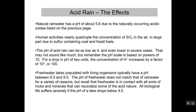Freshwater lakes with living organisms unaffected by man-made pollution would have a pH between about 6.5 and 8.5. But the pH of freshwater doesn't always match that — the water is in contact with all sorts of things that can dissolve and change the pH. We can end up with a pH in a lake down around 4, from all the acid inputs, and that can be a severe problem for wildlife and aquatic life.